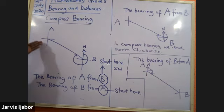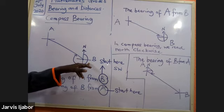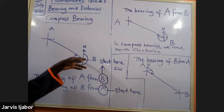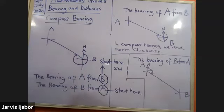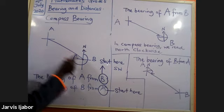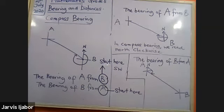To find the bearing of A from B: the reference point will be B, and I'm going to read the angle from B, reading north clockwise until I get to the line where it joins A and B. That is the bearing of A from B. Let's copy that quickly and then take more examples.